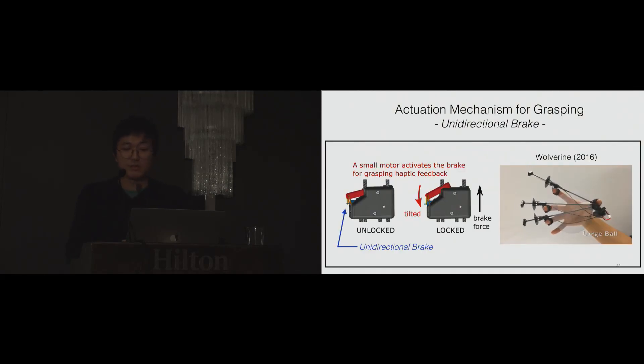To generate grasping force feedback, we brought the brake mechanism from Wolverine. It is a unidirectional brake mechanism that creates very rigid stiffness. We selected this brake mechanism because it is very simple to control and lightweight, but also creates large grasping forces.